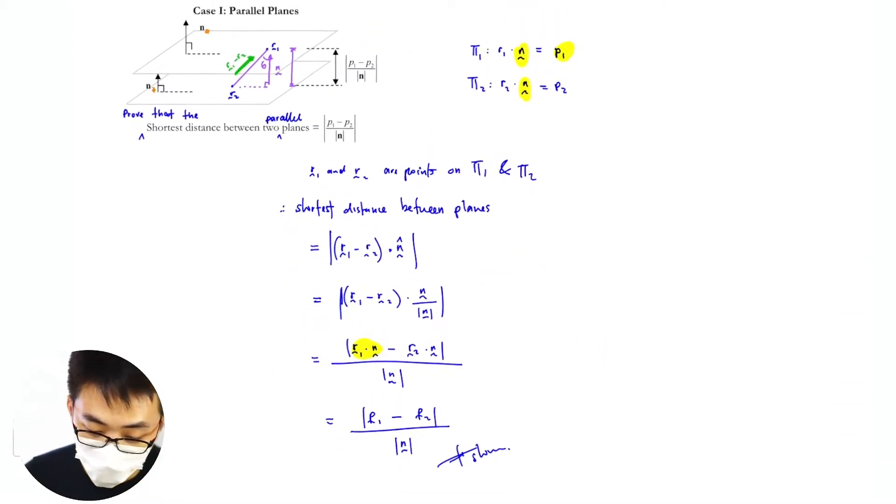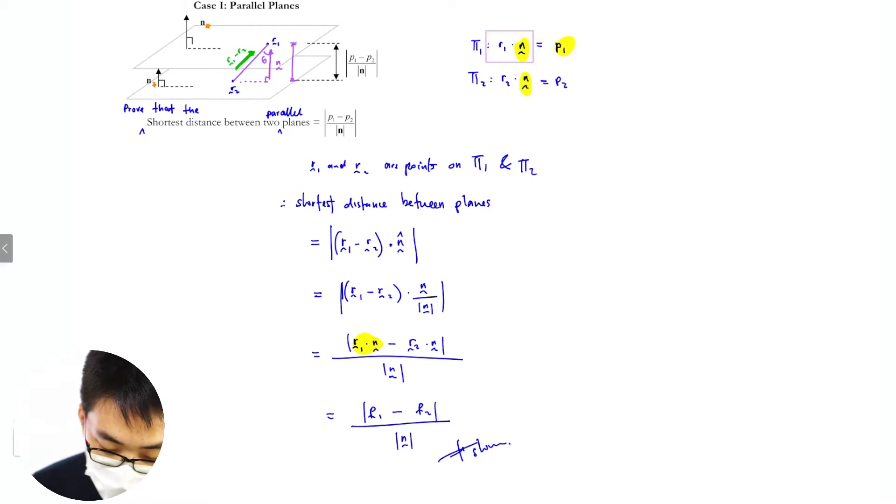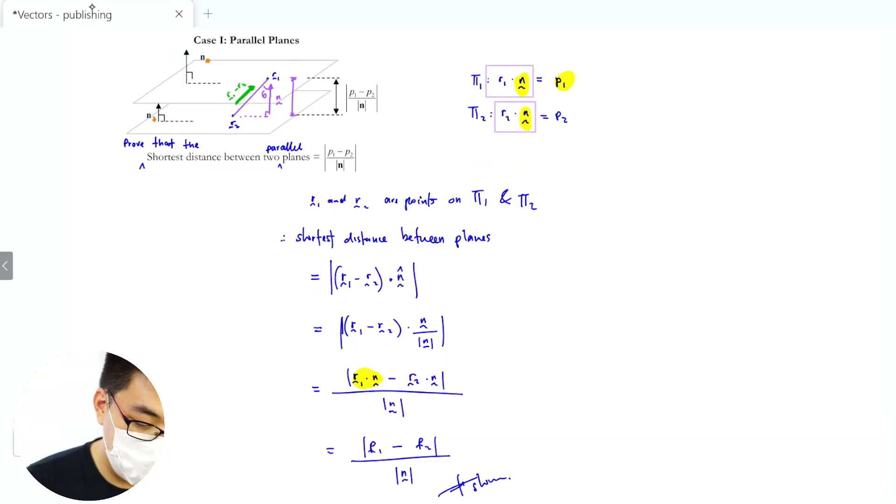Okay repeat, r₁·n is p₁, r₂·n is p₂. So you just substitute it back. That's how you prove.